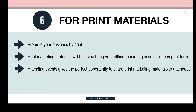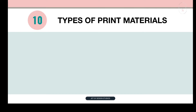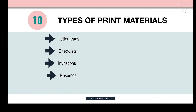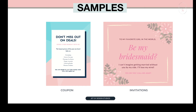One of the biggest perks of Canva is you don't have to start from scratch because it already has a lot of done-for-you templates. The only thing you need to do is add your brand color scheme, logo, and fonts to the template and that's it. Here are 10 types of print materials you can make in Canva: letterheads, checklists, invitations, resumes, magazines, banners, flyers, stationery, coupons, and business cards. Here's a sample — a coupon and an invitation.